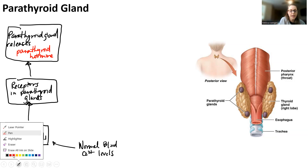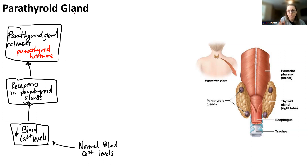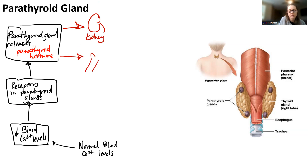Parathyroid hormone essentially has two targets. The first and most important target is the kidney. The second target is going to be the bones. I'm going to draw my femur here — hopefully it doesn't look like a dog this time, though it still kind of does.